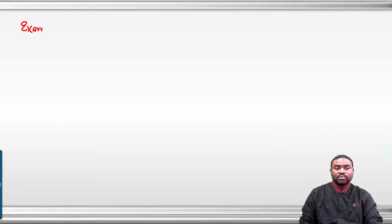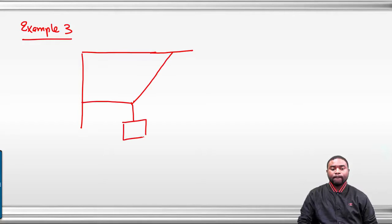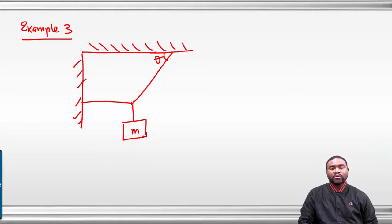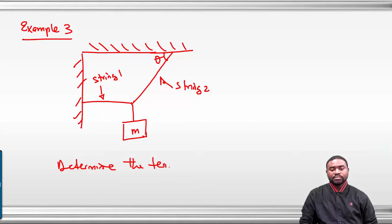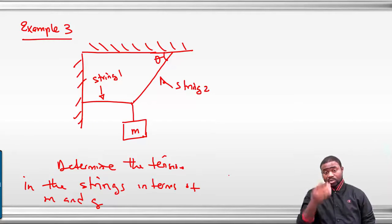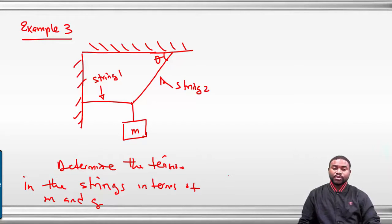Let's look at example 3. We have a mass M. This angle is theta. This is a hanging mass. All strings are massless. This is string 1 and this is string 2. The question is to determine the tension in the strings in terms of M and G. The very first step when you are given a problem involving forces is to draw a free body diagram.